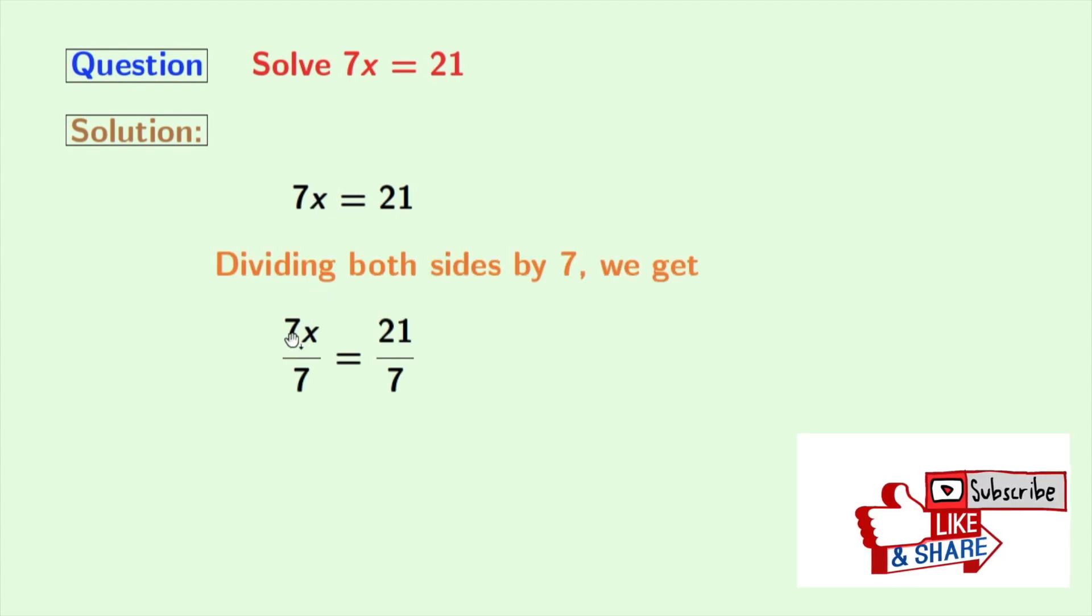Doing so, we get 7x by 7 is equal to 21 by 7. Look that in the left hand side, we have 7 in both the numerator and the denominator. So this gets cancelled and we are left with x.